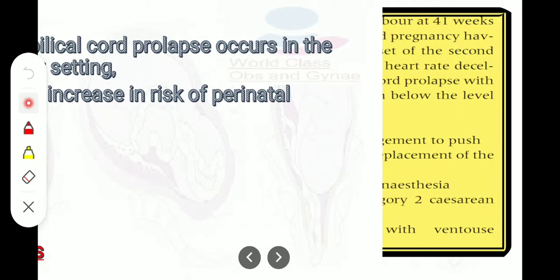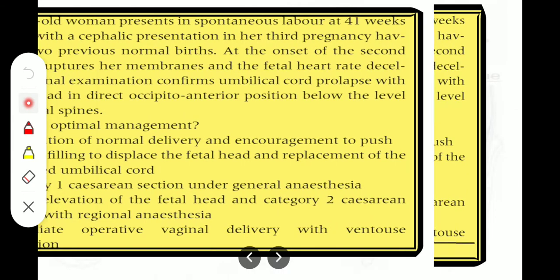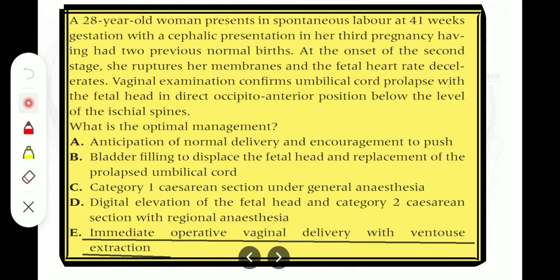Another question: a woman presents at 41 weeks of gestation with spontaneous rupture of membranes and a cephalic presentation in her third pregnancy, having had two previous normal births. At the onset of the second stage she ruptures her membranes and fetal heart rate decelerates. Vaginal examination confirms umbilical cord prolapse with the fetal head in direct occipito-anterior below the level of the ischial spines. What is the optimal management? The answer is immediate operative vaginal delivery with ventouse extraction, because the fetal head is below the level of the ischial spines.